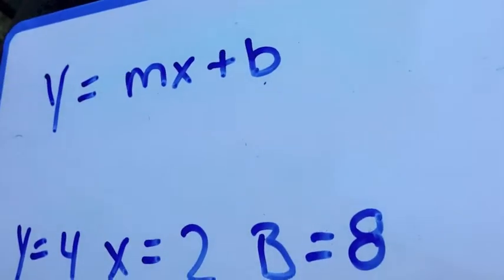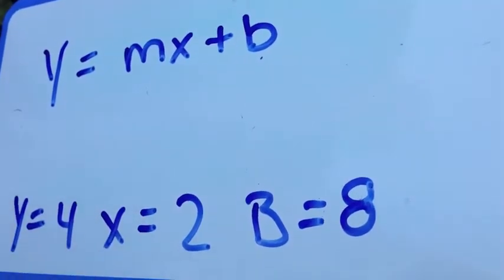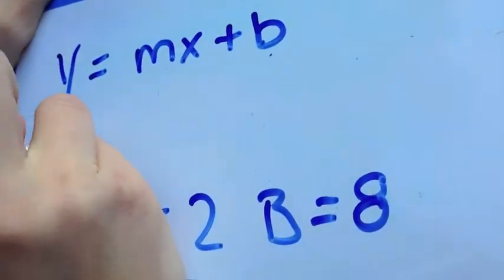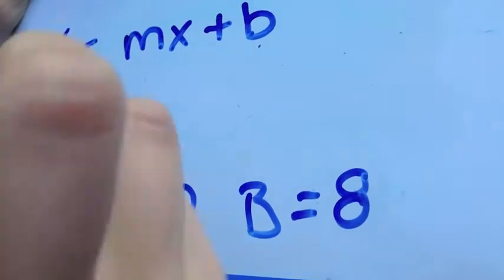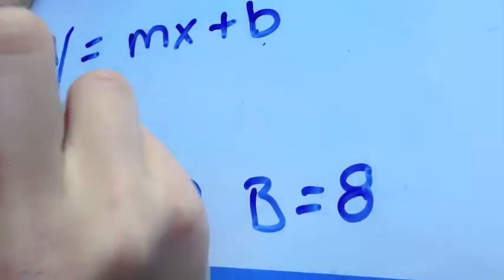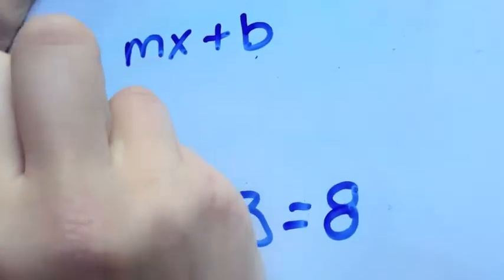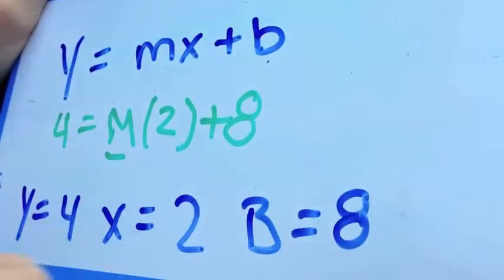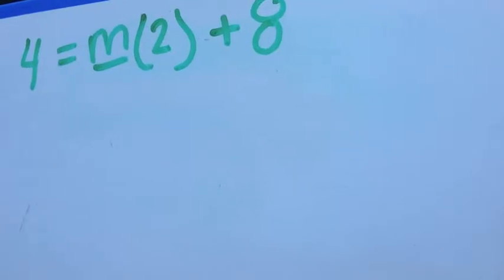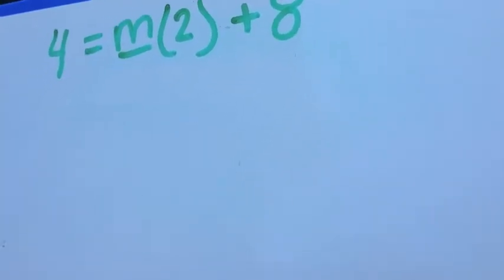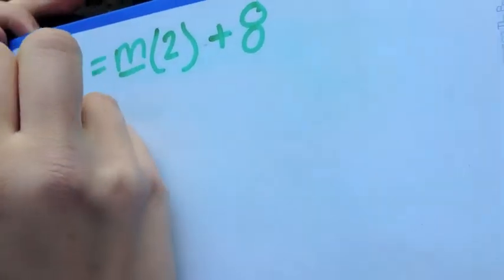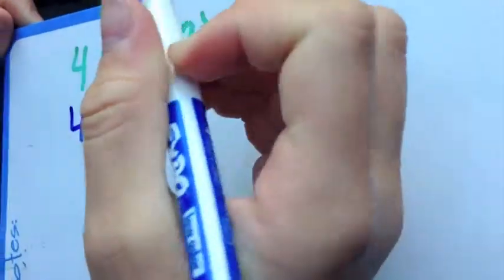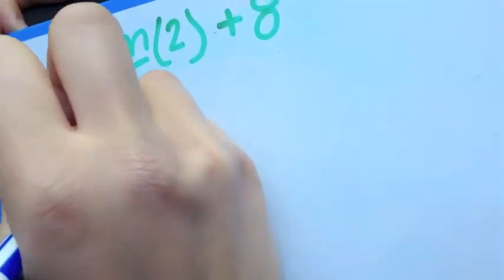So here we'll plug it all in, just like we always do. 4 is y, which is equal to m, which is the number we're finding out, x is 2, plus 8. Do you know what we do next? You multiply across. Exactly! 4 equals 2m plus 8.